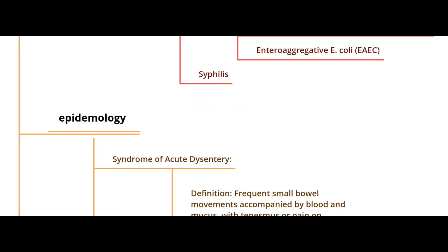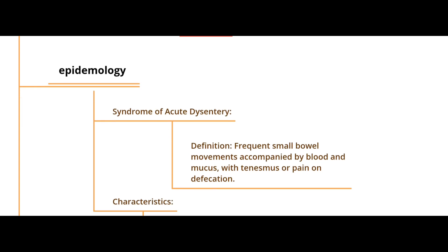Before discussing epidemiology, we need to define the syndrome of acute dysentery: it is frequent small bowel movements with mucus, pain, or blood on defecation. The classification of diarrheal syndromes goes from winter sickness, to diarrhea without fever, to diarrhea with fever. If the patient has diarrhea and fever with mucus or blood in the stool, then it becomes dysentery.